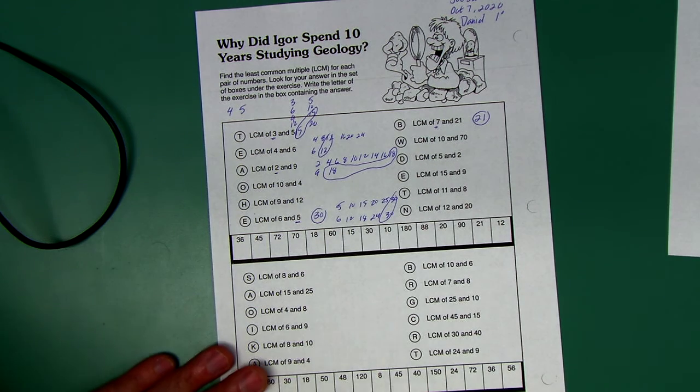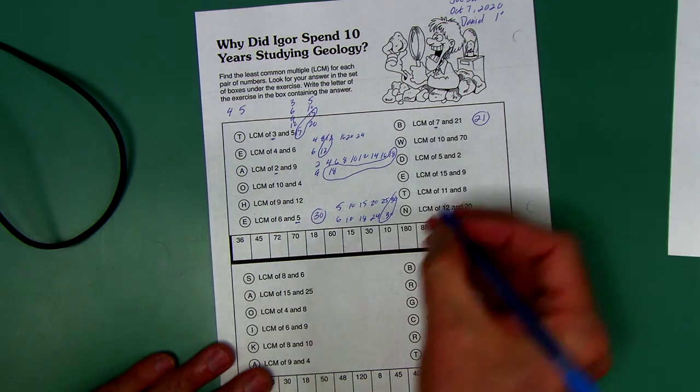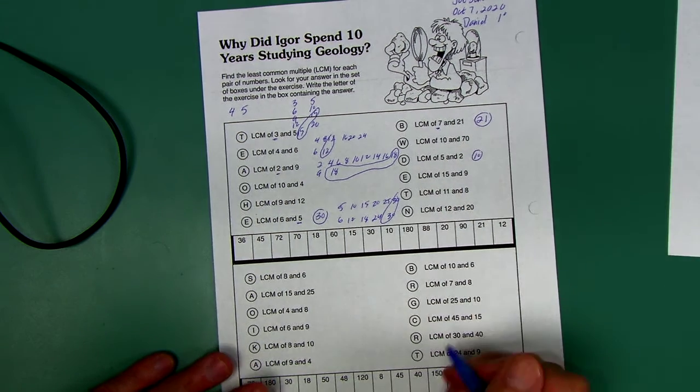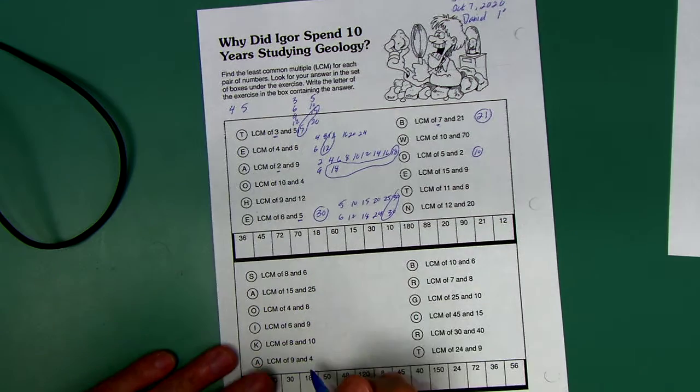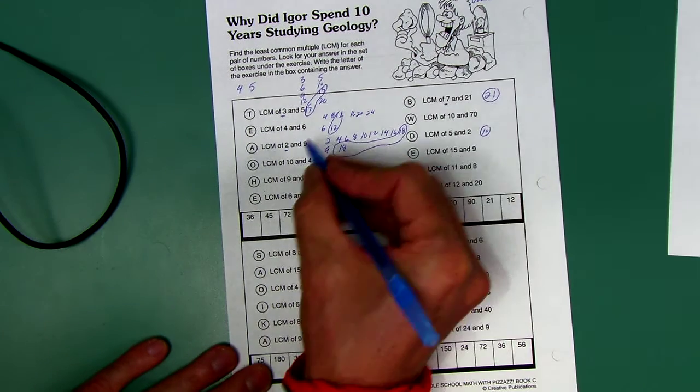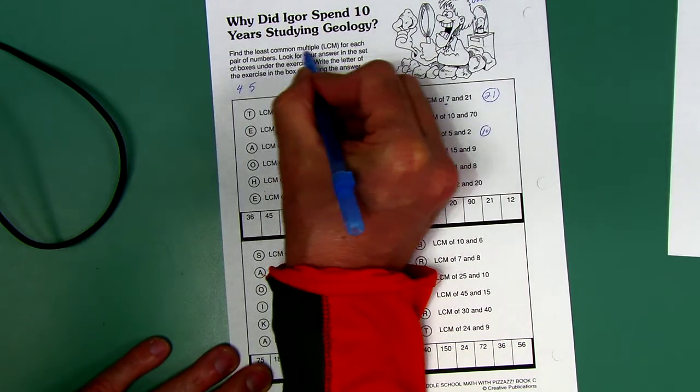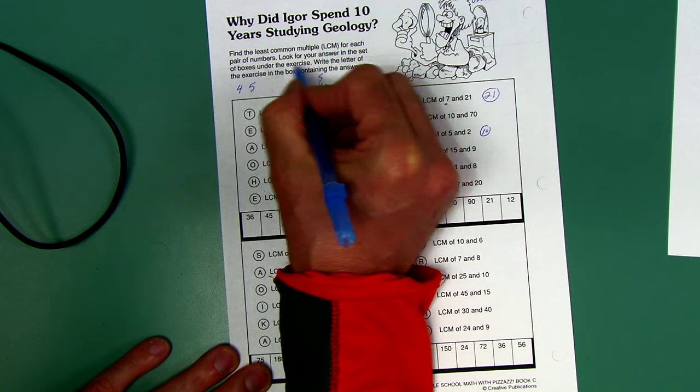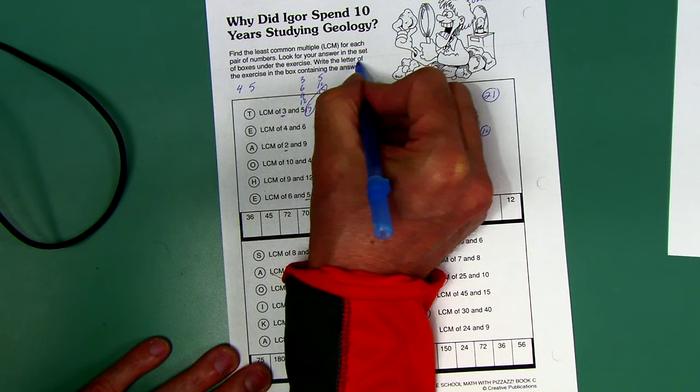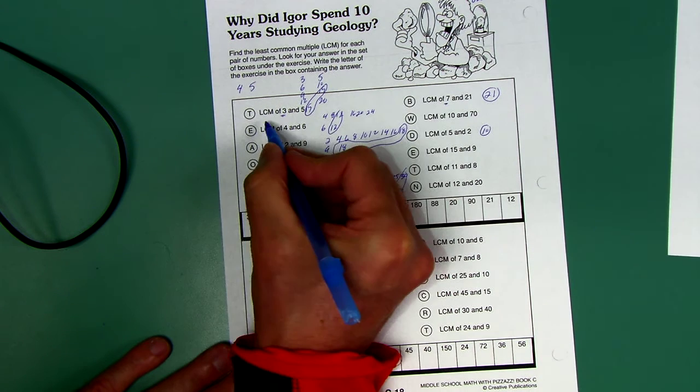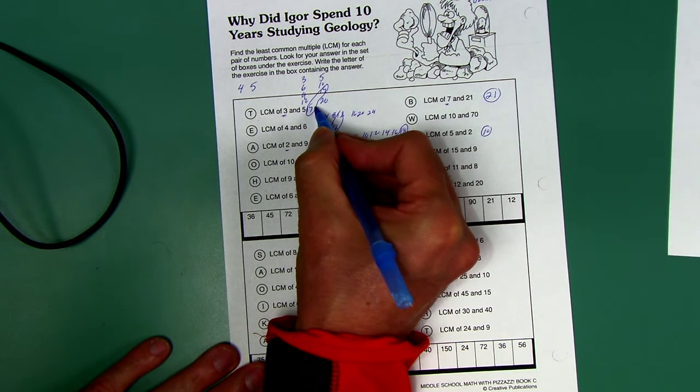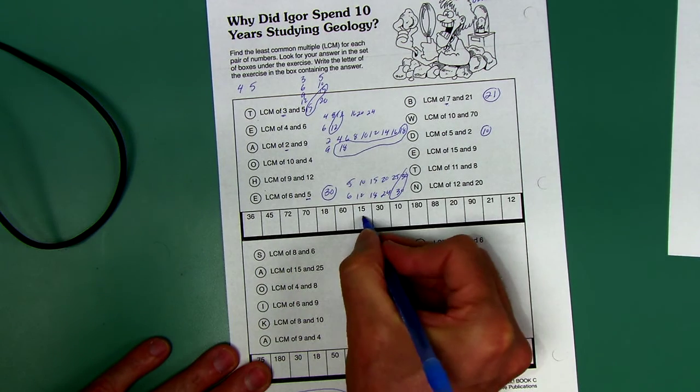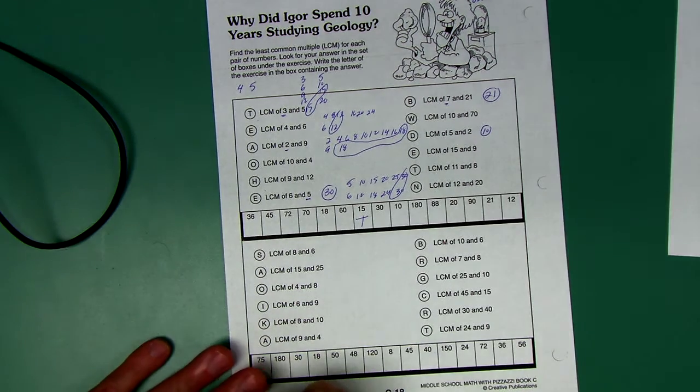The least common multiple there is five times two, it's a multiple of two and a multiple of five. So this is how you're going to be doing this. When you get done, it says find the least common multiple for each pair of numbers, look for your answer in the set of boxes, and write the letter of the exercise. The first one I did was T and the answer was 15. I go find 15 and put a T.